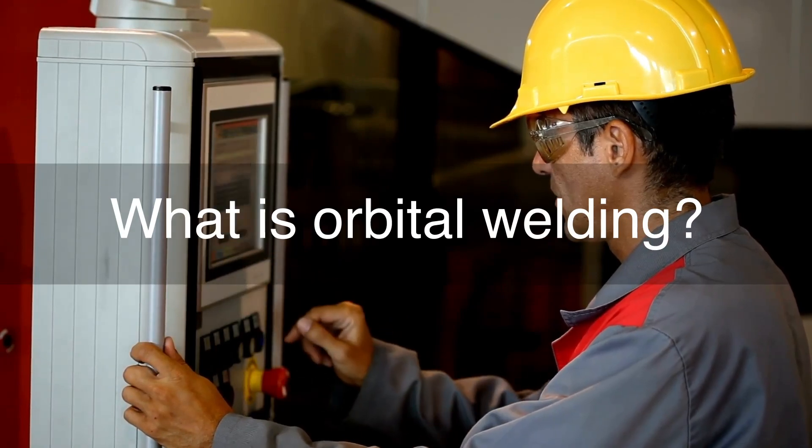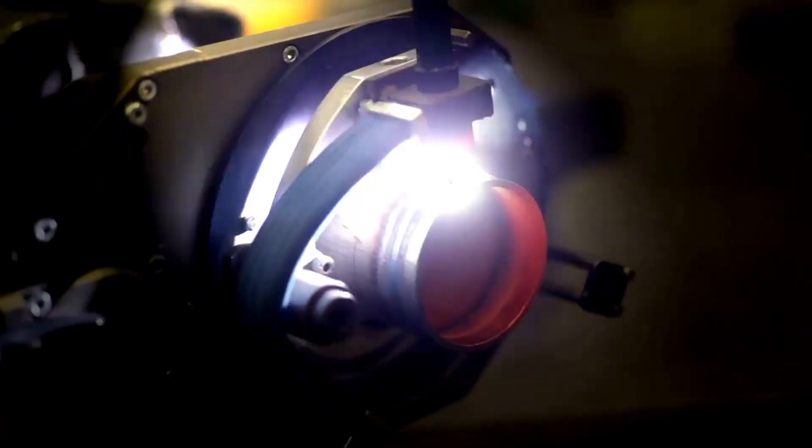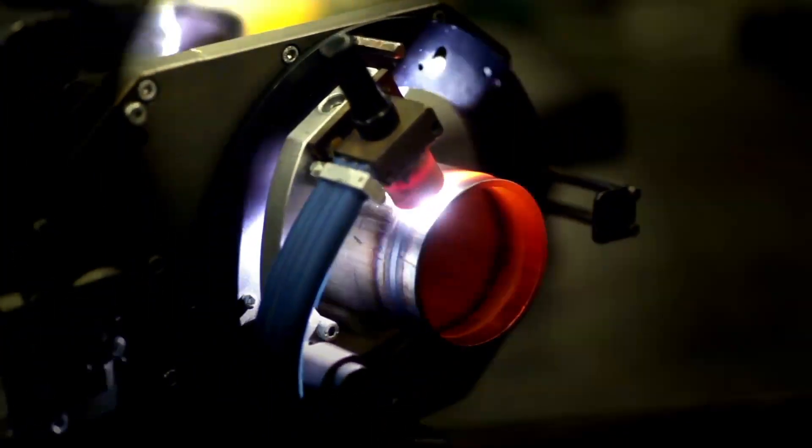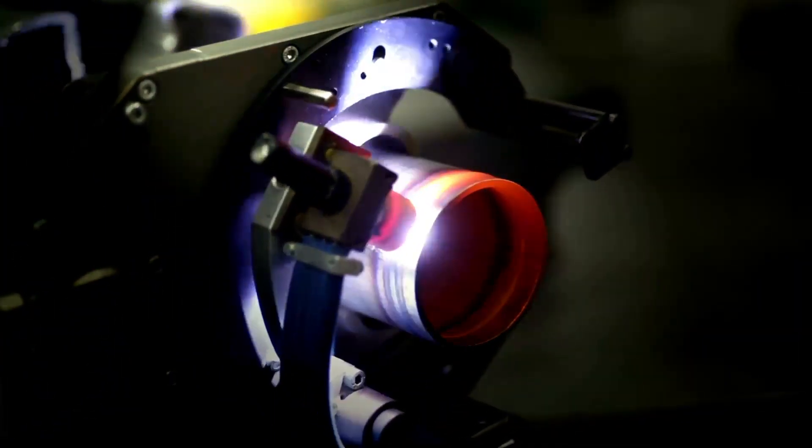What is orbital welding? With an electrode circling, or orbiting, 360 degrees around the workpiece, orbital welding is the automated or mechanical joining of tubes or pipes.